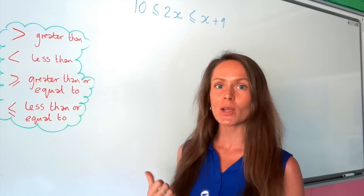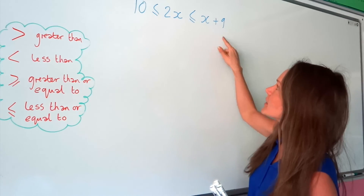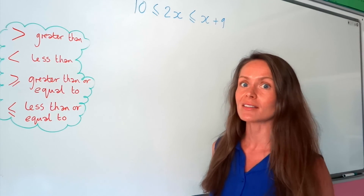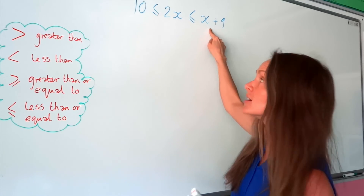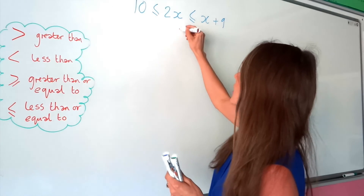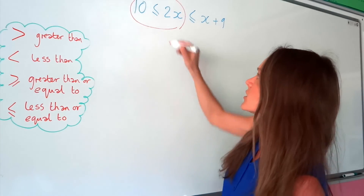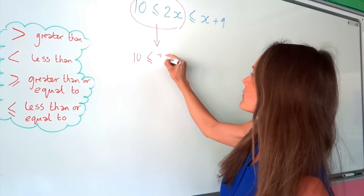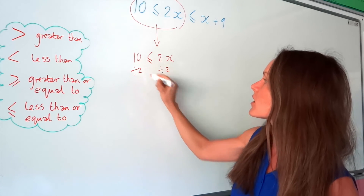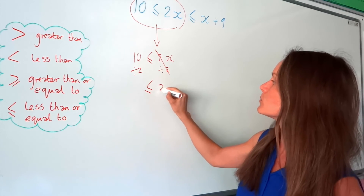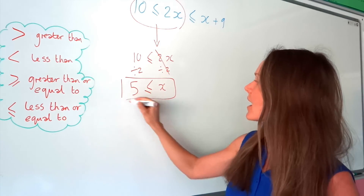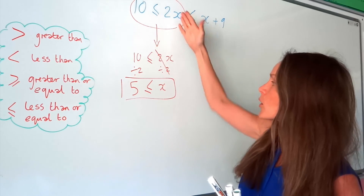Here's a challenge question to finish. We've got two inequality signs, and also x's in more than one place. When that happens, you need to split the inequality into two sections. Looking at the left-hand side first — I divide by 2 on both sides. 2 divided by 2 leaves 1x, and on the left-hand side I have 5. So x is greater than or equal to 5. That's half the inequality solved.